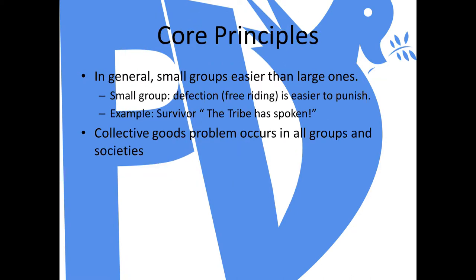In general, collective goods are easier to provide in small groups rather than large ones. In a small group of say four people, defection — more commonly referred to as free riding — is a lot easier to punish because it's harder to conceal. If one person is not pulling their weight out of four people, it's pretty obvious. For example, if Jimmy's not building roofs for the shelters while everybody else is doing their task, it's going to be pretty obvious when it starts to rain.